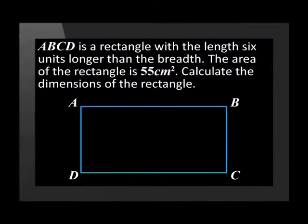ABCD is a rectangle with the length 6 units longer than the breadth. The area of the rectangle is 55 centimeters squared. Calculate the dimensions of the rectangle. We are asked to calculate the dimensions of the rectangle. That means we need to find the length and the breadth. Let's get started.